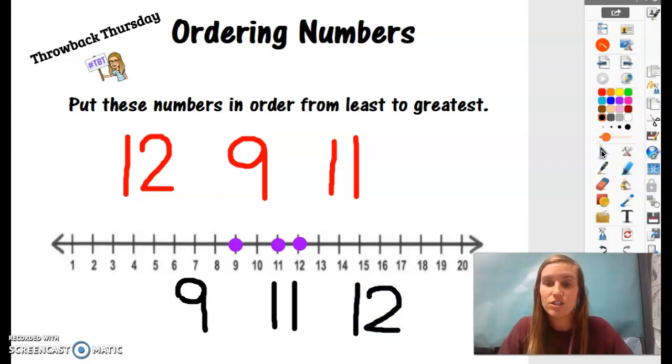Again, we can also use place value to help us figure this out. Because 9 is just a one-digit number. 11 and 12 are both two-digit numbers. 11 has one group of 10, but only one one. And then 12 also has one group of 10, but two ones. So that means it is greater than 11.